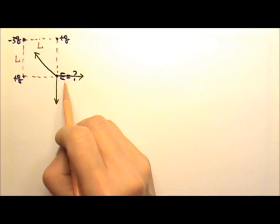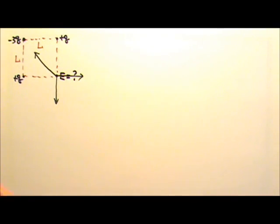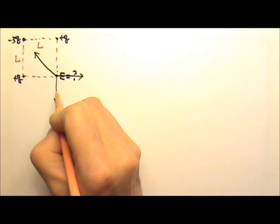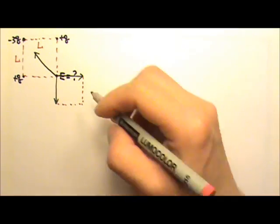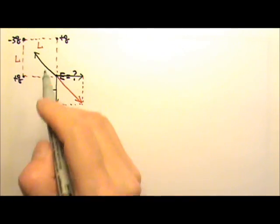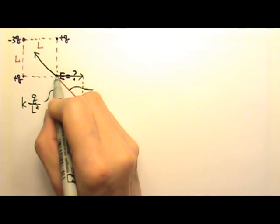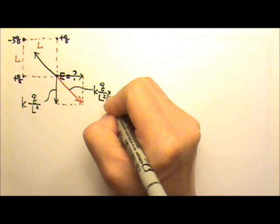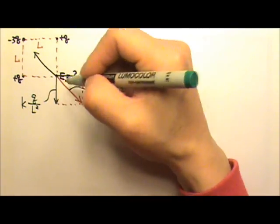To find the net electric field at the fourth corner, we add three electric field vectors. Because of the symmetry along the diagonal, it is easier to add the two equal-magnitude vectors first using a parallelogram — which in this case is a square — and the diagonal gives their sum. Then we handle the third vector, which is in the opposite direction, so we subtract.